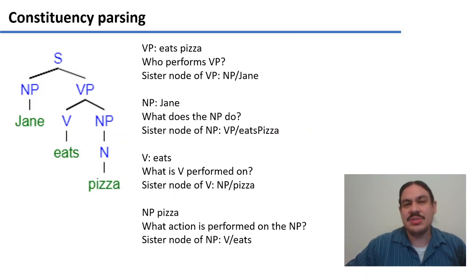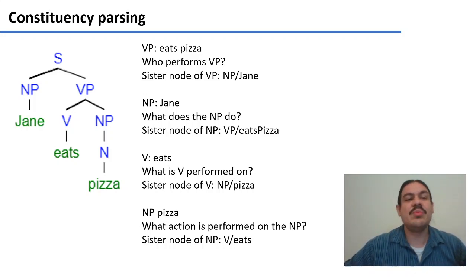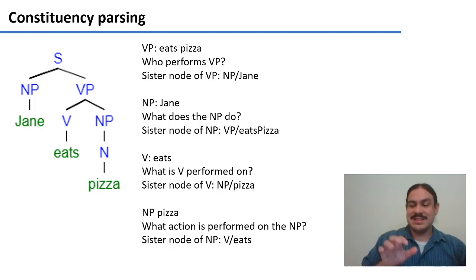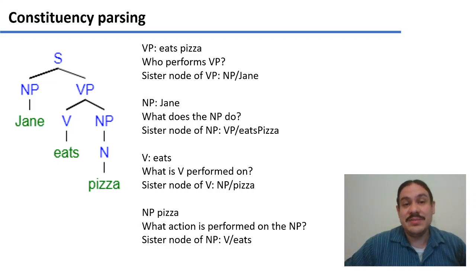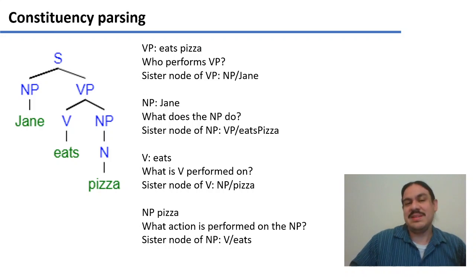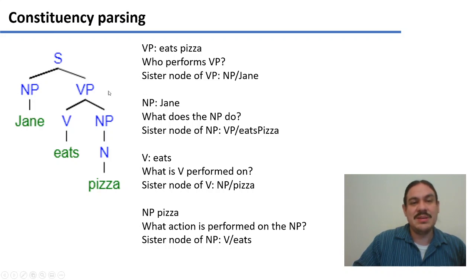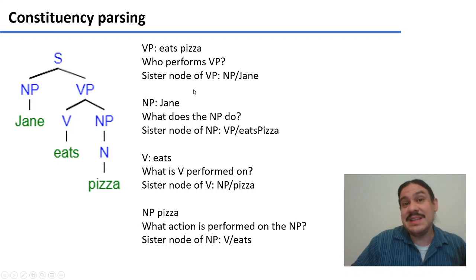Why do we care about constituents? Because they are a way for us to get information from the sentence. Let's say we have the sentence 'Jane eats pizza.' We know it has a noun phrase and a verbal phrase as the nodes most directly connected to the sentence. So if we read the yield of VP — the terminals connected to VP — they would be 'eats pizza.' Who performs the action in VP? The sister node of VP, in this case the NP which contains the terminal Jane. So who eats pizza? Jane.